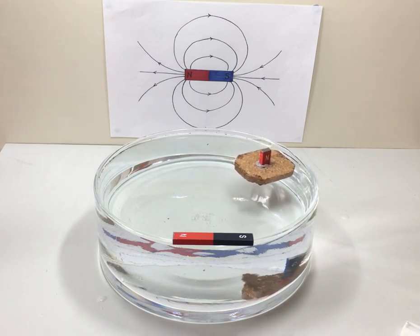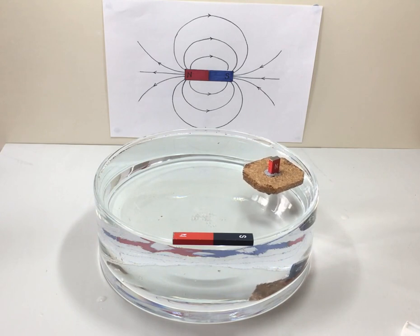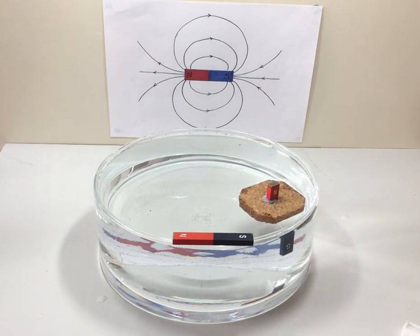It soon becomes apparent that the floating magnet is actually following the path of the field lines.